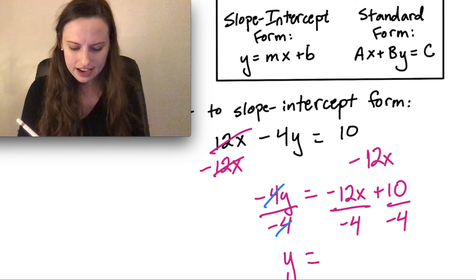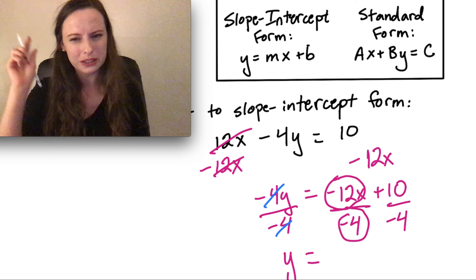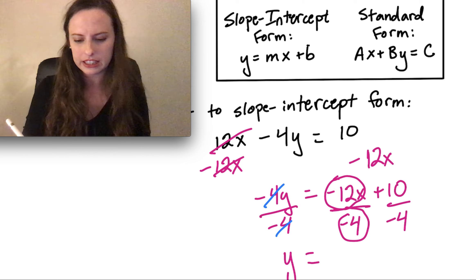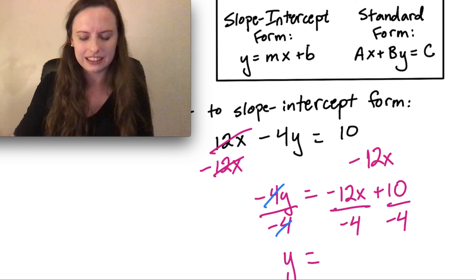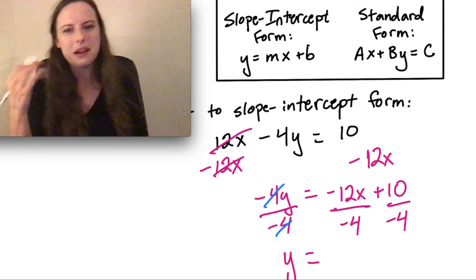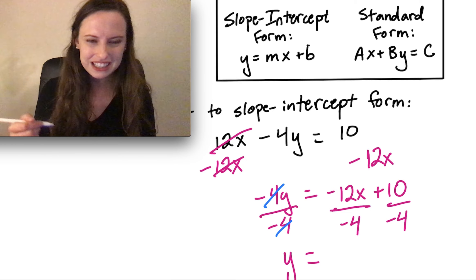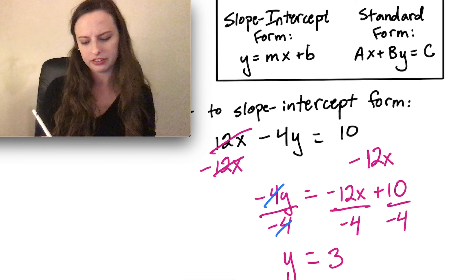Here, notice that I've got this negative 12x divided by a negative 4. It's really important that you pay attention to those negatives here because it can be very easy to miss the fact that you've got a negative divided by a negative, making it positive.